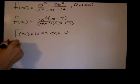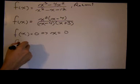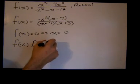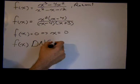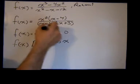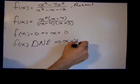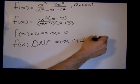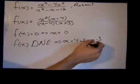And next is where f of x does not exist, and that would imply that x equals 4, and x equals negative 3, setting the denominator equal to zero.